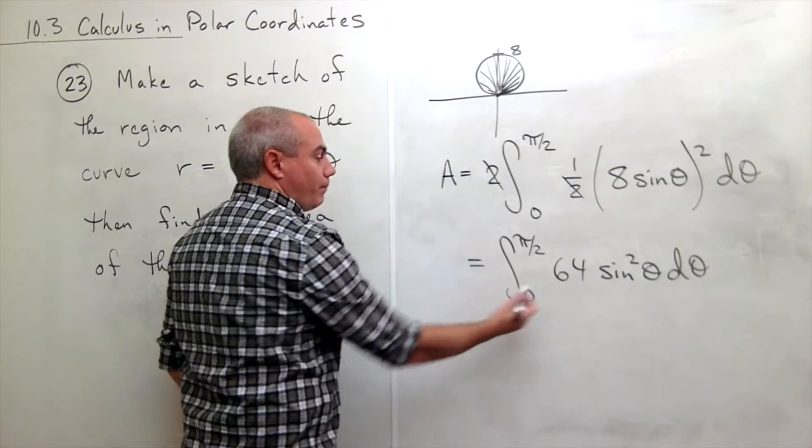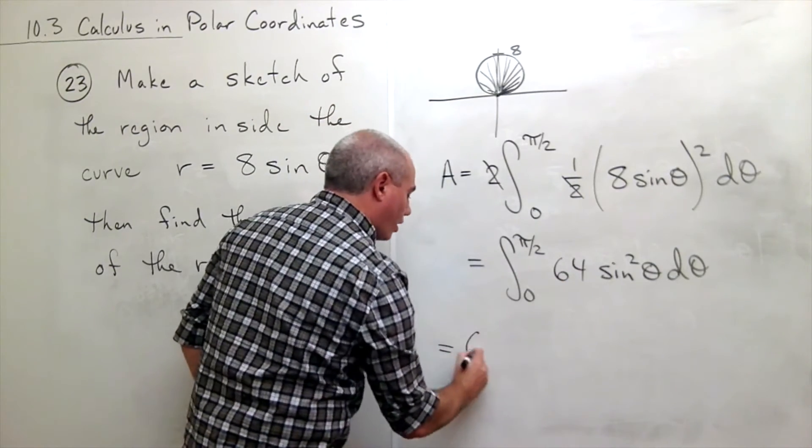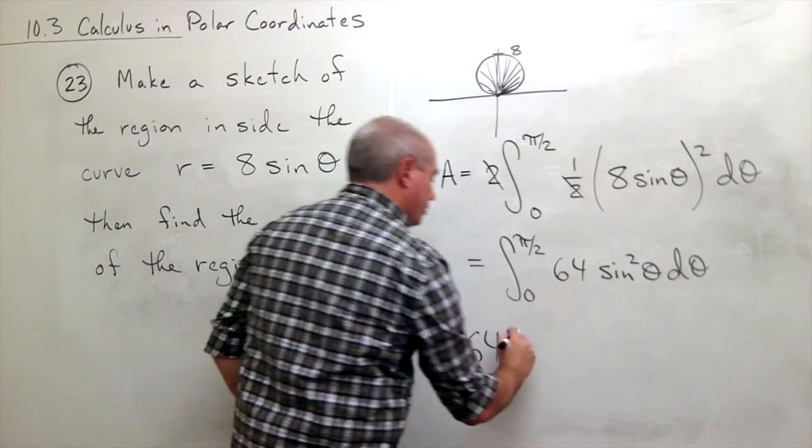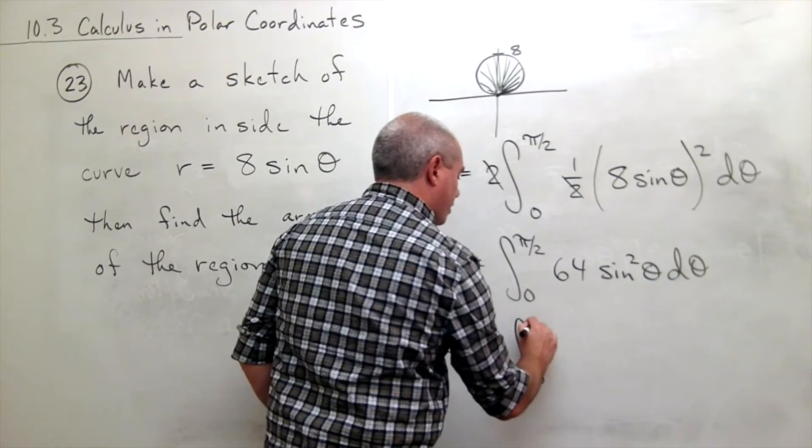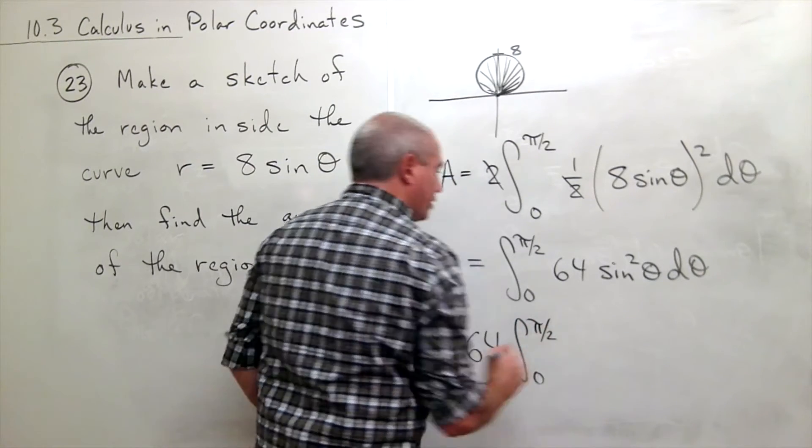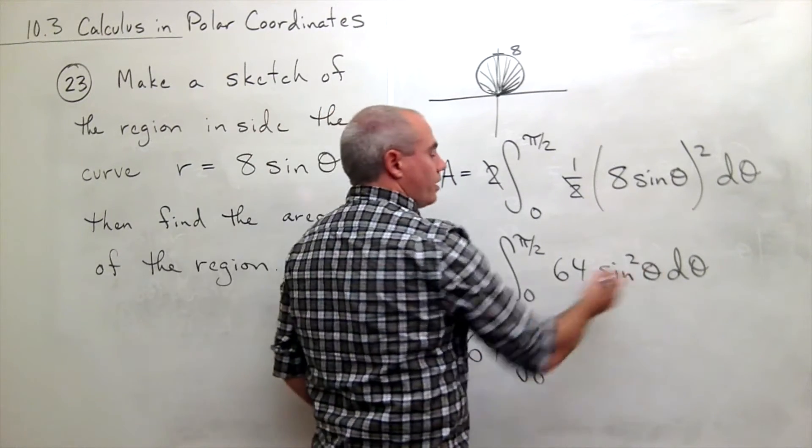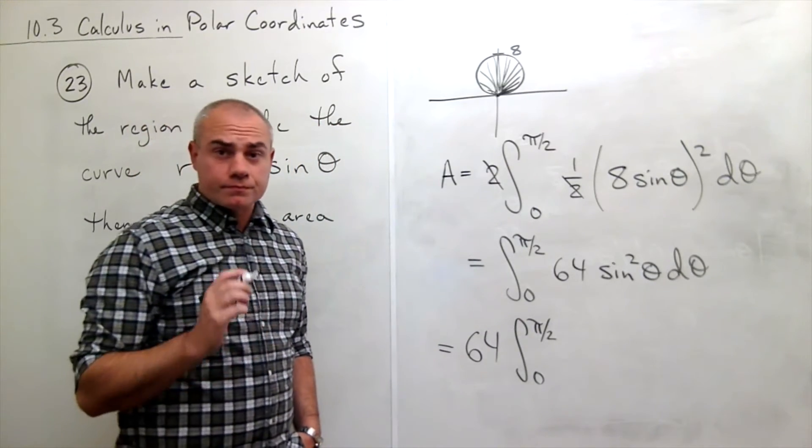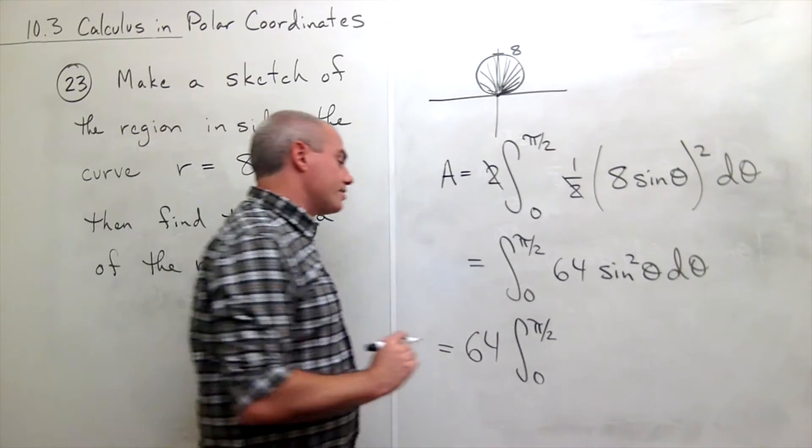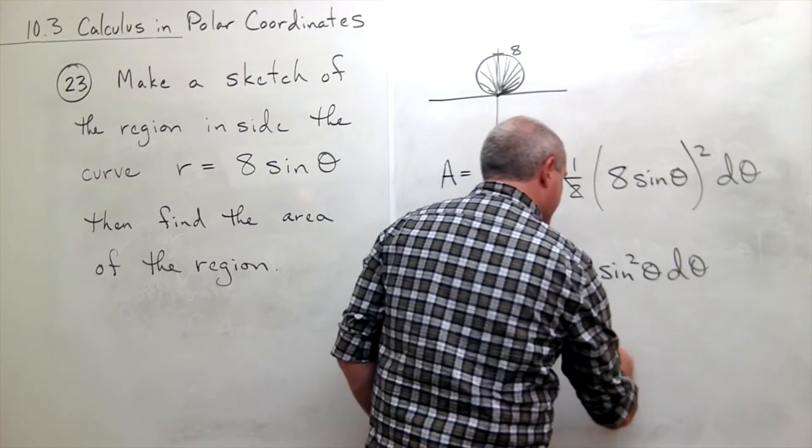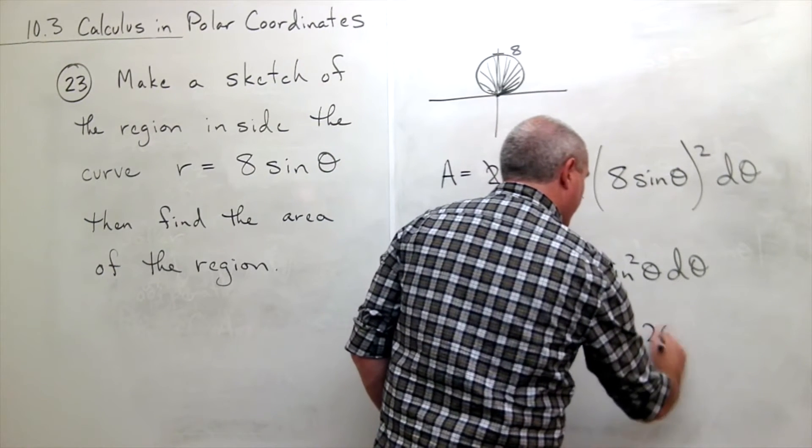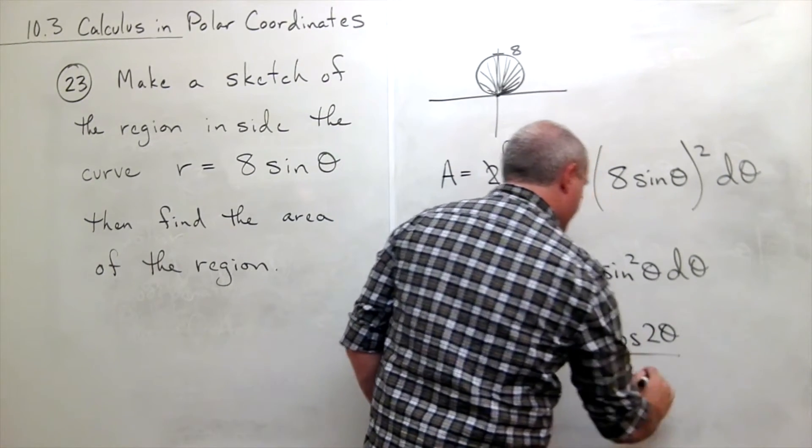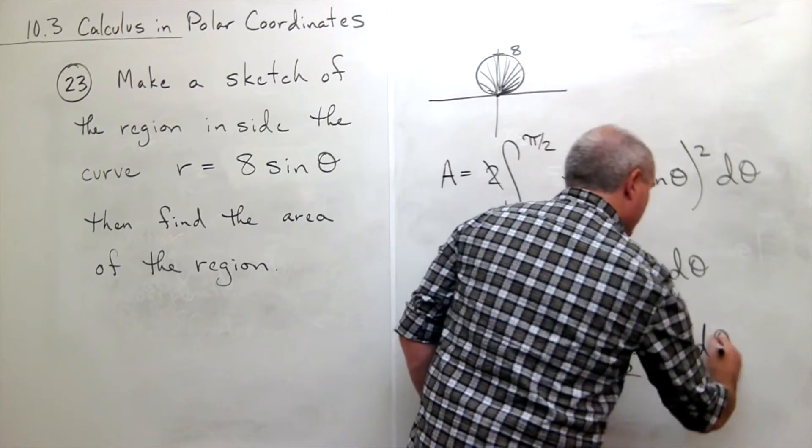So I'll pull the constant 64 outside of the integral and now I have integral 0 to pi over 2 of sine squared of theta. But sine squared of theta is the same thing as 1 minus cosine of 2 theta divided by 2 d theta.